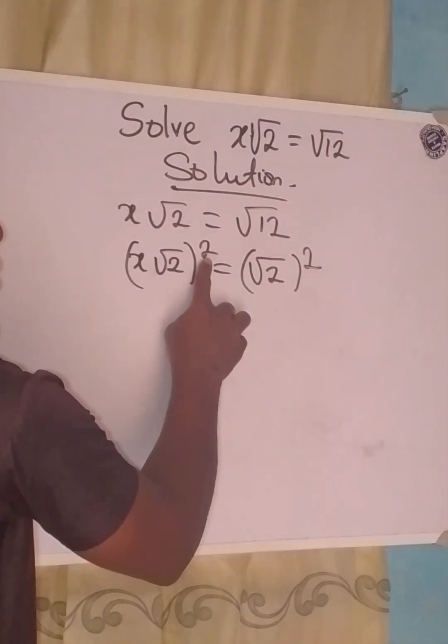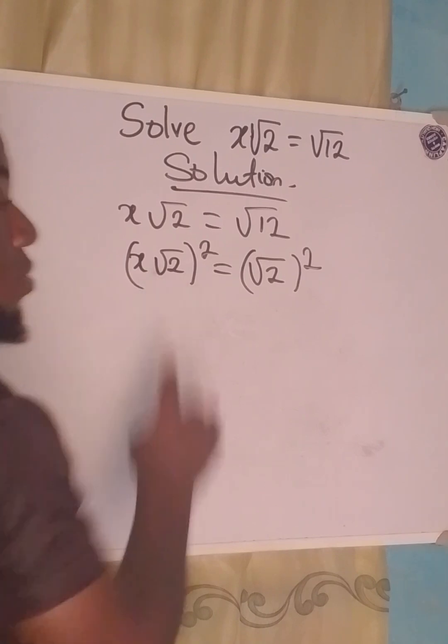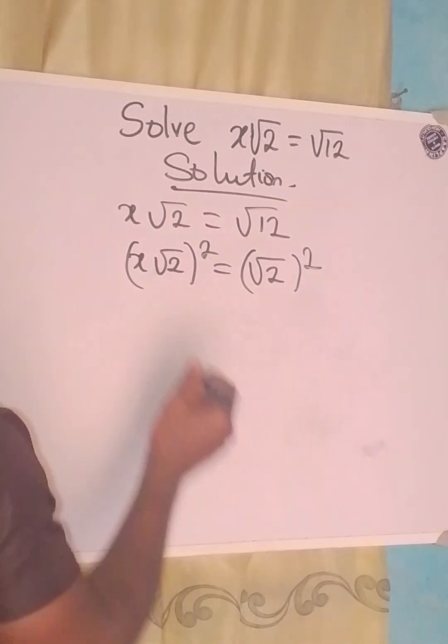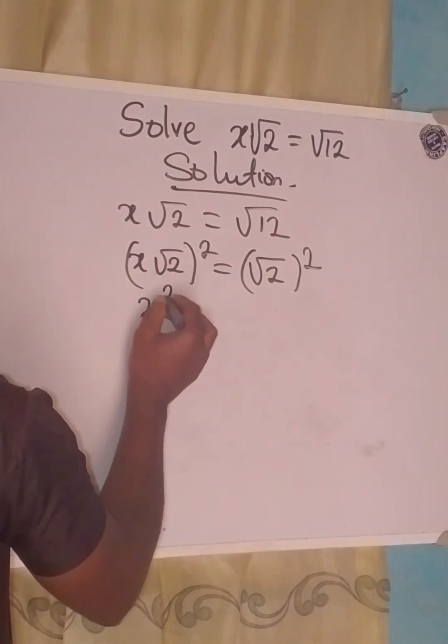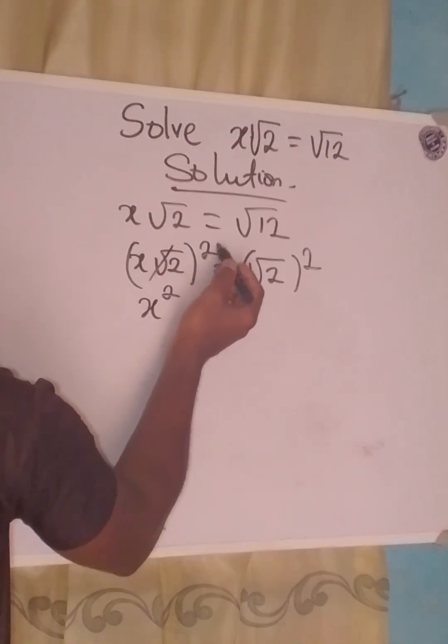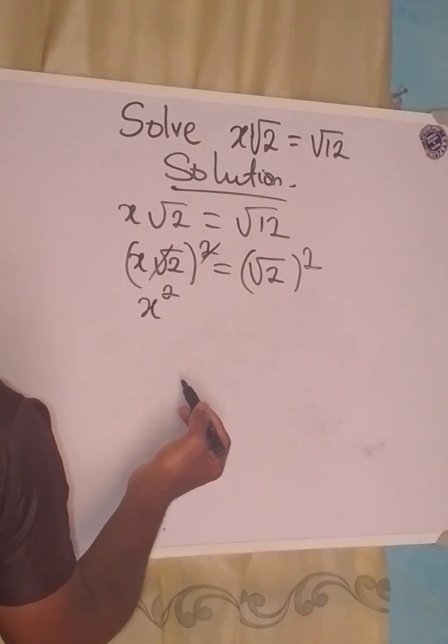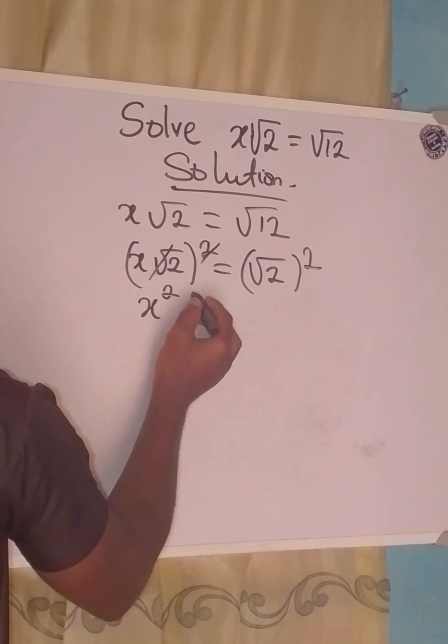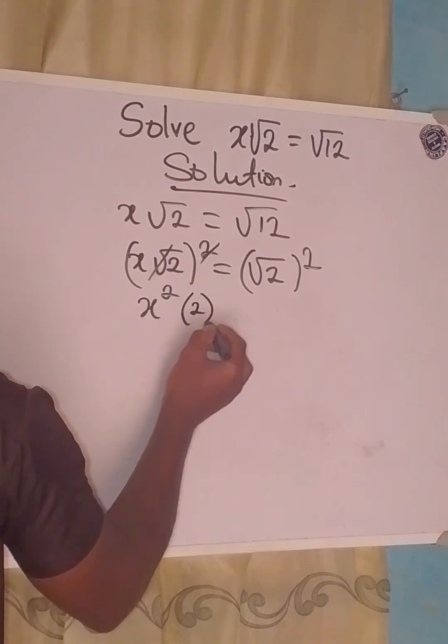This square here is for both x and √2, so we now have x². The square and the root can cancel, then we multiply what we have here by 2, and this equals—sorry, this is supposed to be 12—so we have x² · 2 = 12.